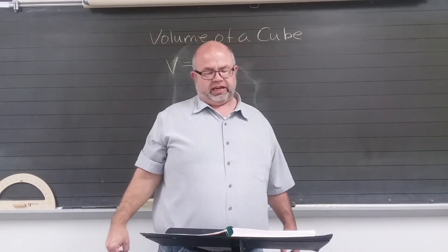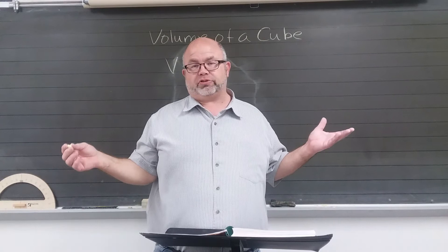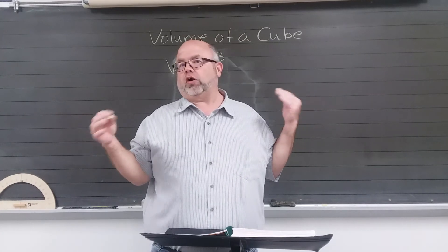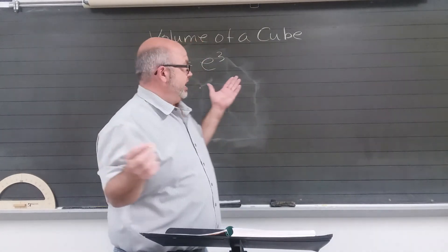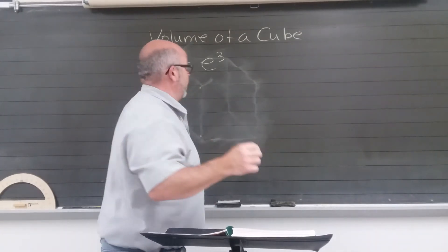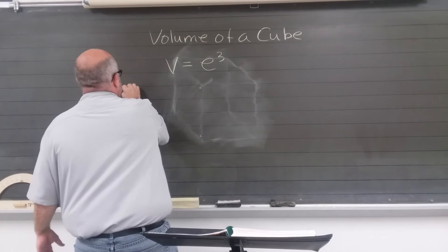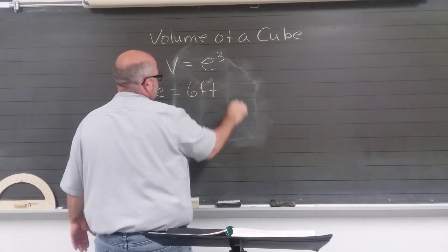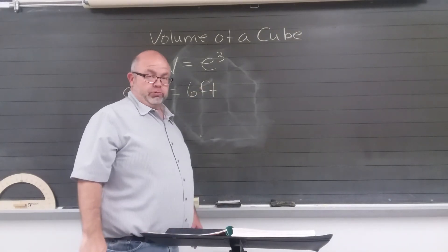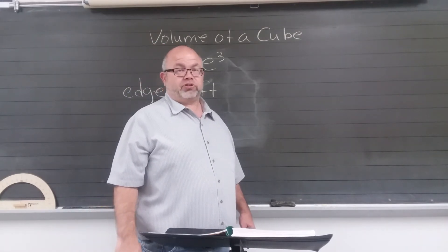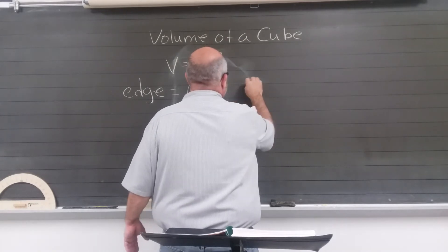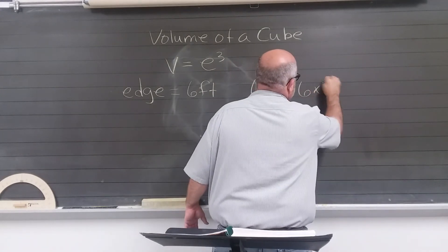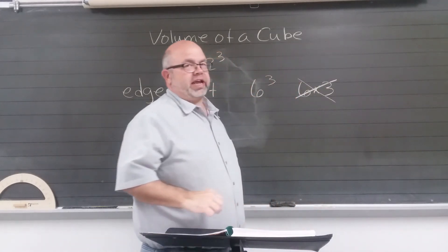It's still length times width times height, but since all edges are the same, it's just edge times edge times edge — not edge times three. So if your edge equals 6 feet, your equation is 6 cubed. This does NOT mean 6 times 3 — you'll get the wrong answer every time if you do that.